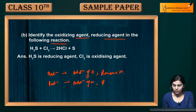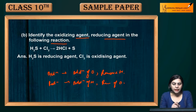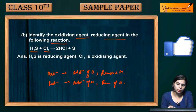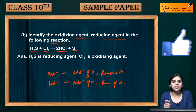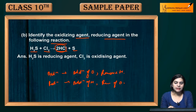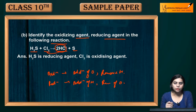The reaction is: H₂S + Cl₂ → 2HCl + S. Now, where is hydrogen added? It is added to Cl₂, forming HCl — so this is reduction.